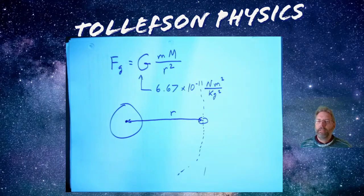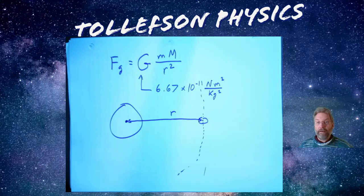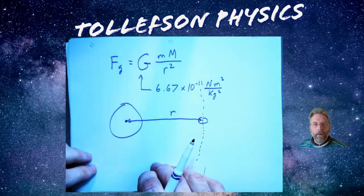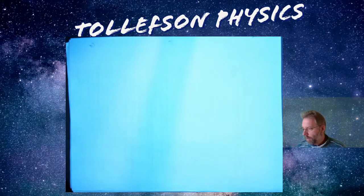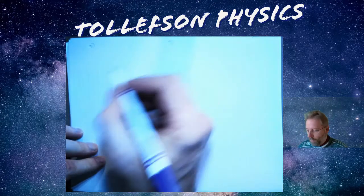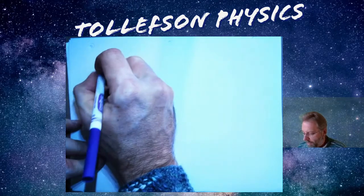How can we take this idea and actually come up with the acceleration of gravity in any spot anywhere? For our example, let's do it on Earth, because on Earth we know it's approximately 9.8 meters per second squared.